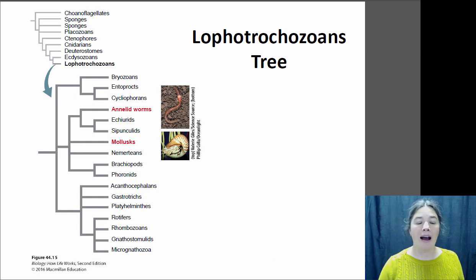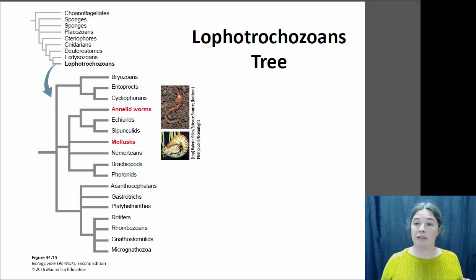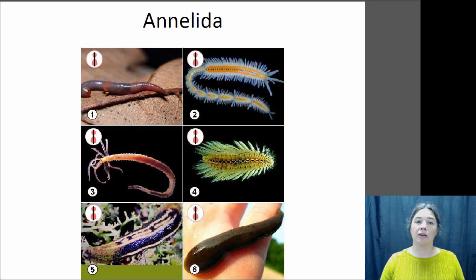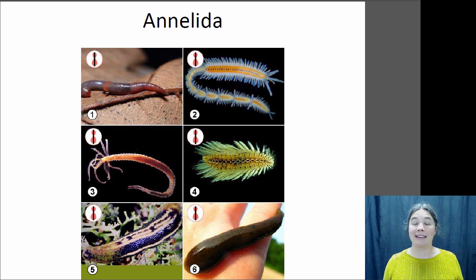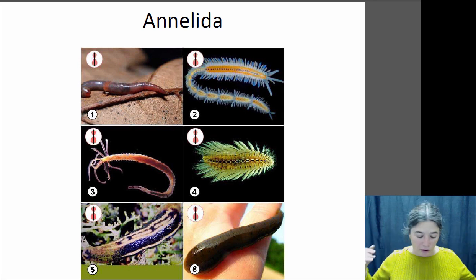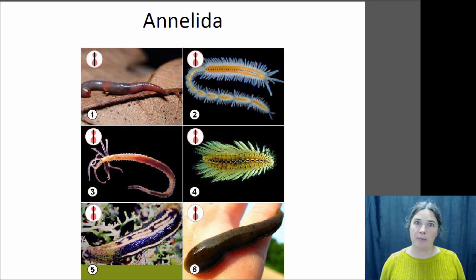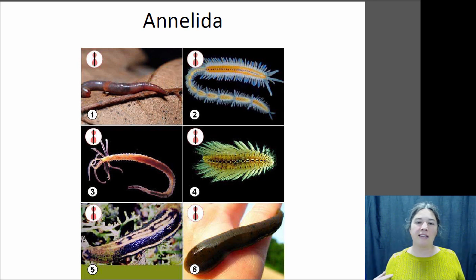The lophotrochozoans have a lot of diversity, but the two major groups to know are the annelid worms and the mollusks. The annelida are the segmented worms, which include earthworms, leeches, and polychaete worms — any worm where you can see distinct segmented lines. I have a lot of experience with leeches from my field site in Australia, which had land leeches. They don't live in water; they live on land, are bloodsuckers, and are heat-seeking. They're actually my favorite blood-sucking parasite because they don't carry diseases, don't buzz around your face, and their bites don't hurt — they have an anesthetic in their saliva.